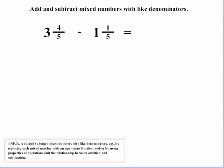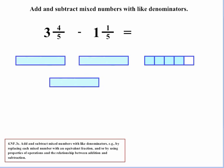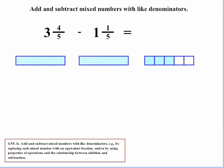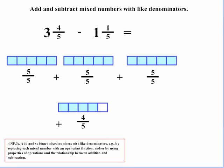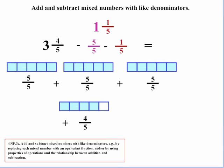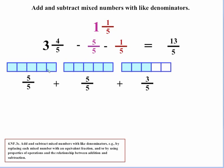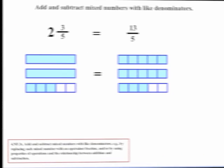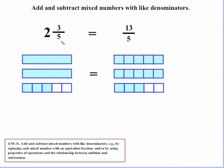Let's do a subtraction example: 3 and 4/5 minus 1 and 1/5. Using the visuals, we have 3 and 4/5 and we take away one whole and then 1/5. What remains is 2 and 3/5. We can also do this strictly from a fractional standpoint by converting all wholes into fifths. We subtract 5/5 and then another 1/5, giving us 13/5. Just like the previous example, we can compare why 2 and 3/5 is equivalent to 13/5 using the visuals.